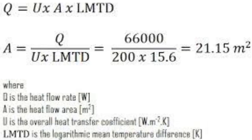The heat transfer equation is: Q = U × A × ΔT, where Q is heat in watts, U is the overall heat transfer coefficient in watts per square meter per degree Celsius, A is the surface area in square meters, and ΔT is the temperature difference between the hot and cold fluids in degrees Celsius.